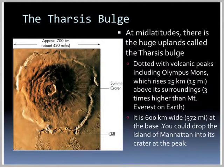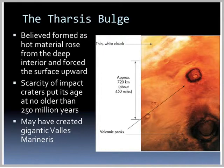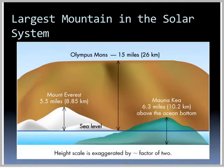The Martian poles are bordered by immense deserts with dunes blown into parallel ridges. At mid-latitudes, there's a huge upland called the Tharsis Bulge, dotted with volcanic peaks including Olympus Mons, which rises 25 kilometers — 15 miles — above its surroundings, three times higher than Mount Everest. It is 370 miles wide at the base, and you could drop Manhattan into the crater at its peak. It is believed to have formed as hot material rose from the deep interior, and there are hardly any impact craters on it, suggesting an age of no more than 250 million years. Olympus Mons is the largest mountain in the solar system.